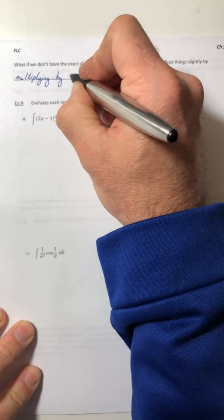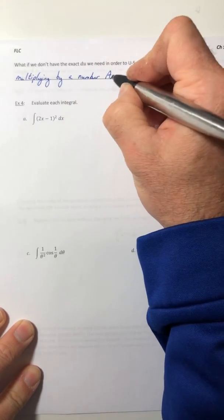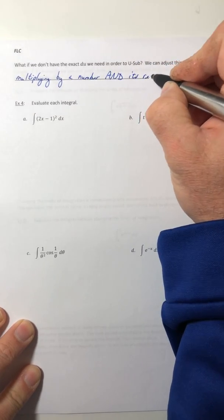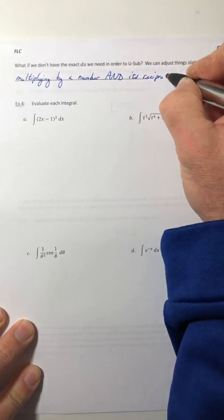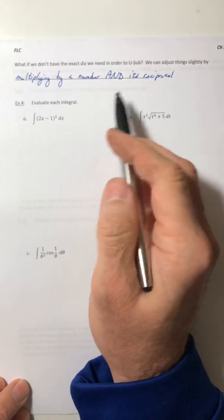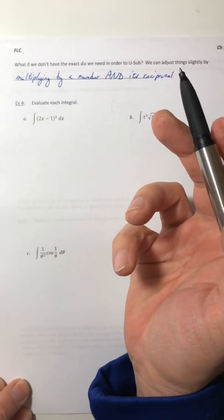So you can multiply in by any number you want as long as you also multiply by its reciprocal, because essentially that would be multiplying by one.